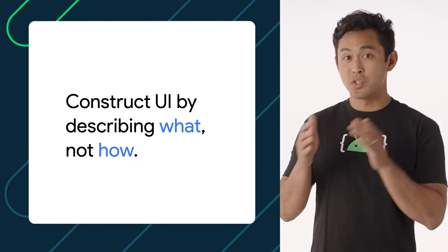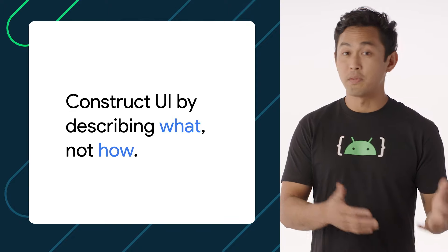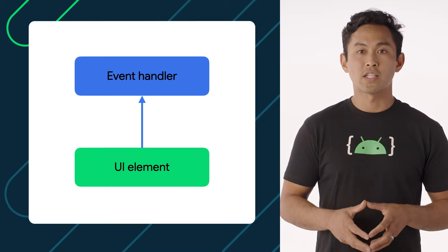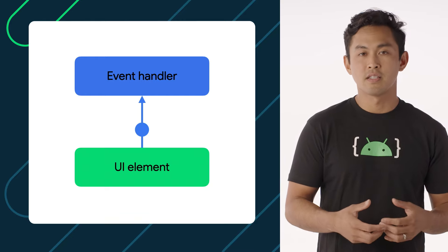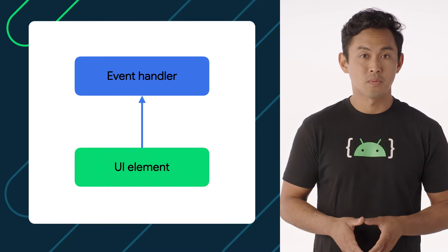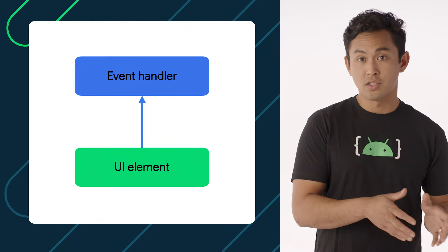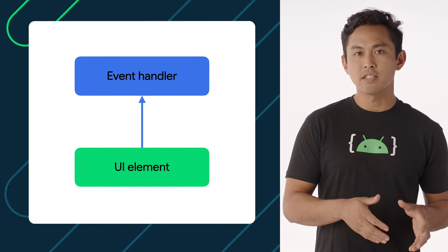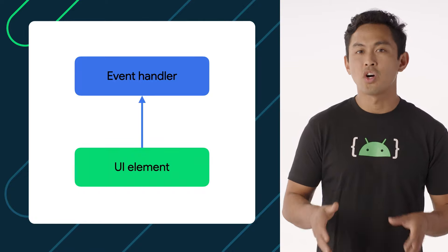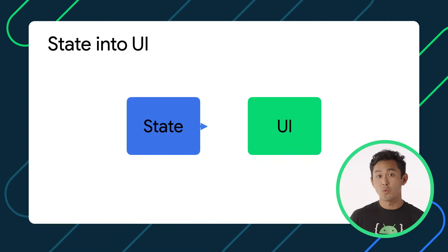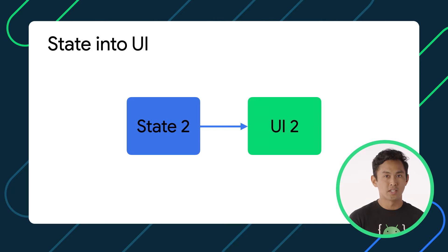So if state controls the UI, how do we go about updating state to update the UI? In Compose, we do that through events. When a user interacts with a UI element, the UI emits an event such as onClick, and the event handler can then decide if the UI state should be changed. If UI state changes, the functions, or UI elements, that depend on that state will be re-executed. This process of regenerating the UI when state changes is called recomposition. The process of converting state into UI and state changes causing UI to regenerate is at the core of how Compose works as a UI framework.